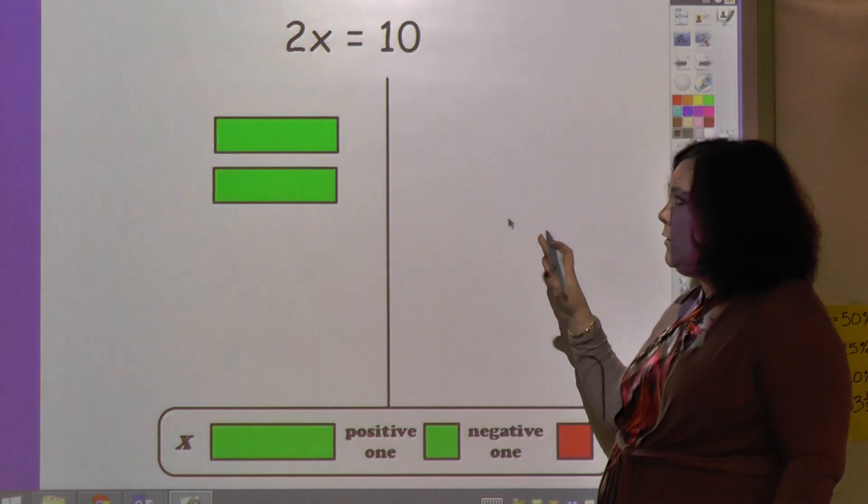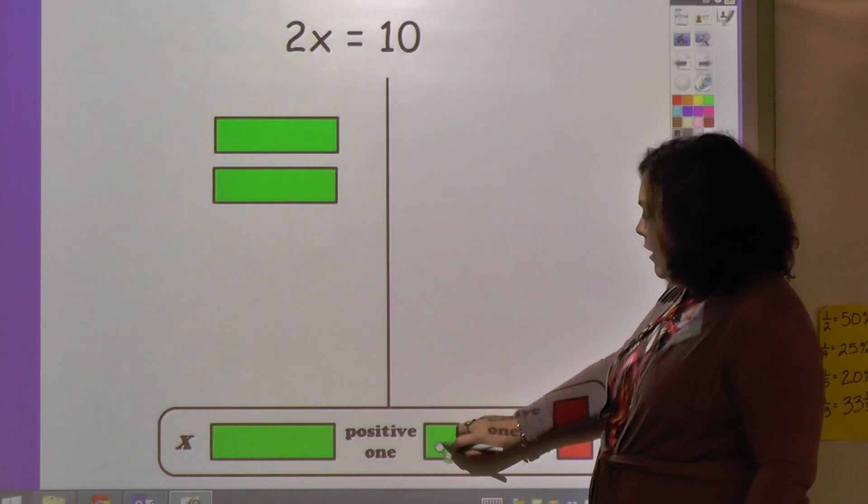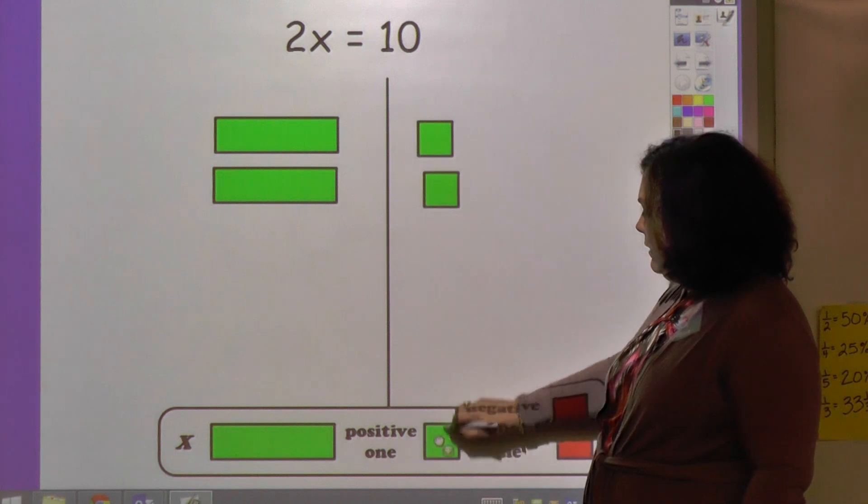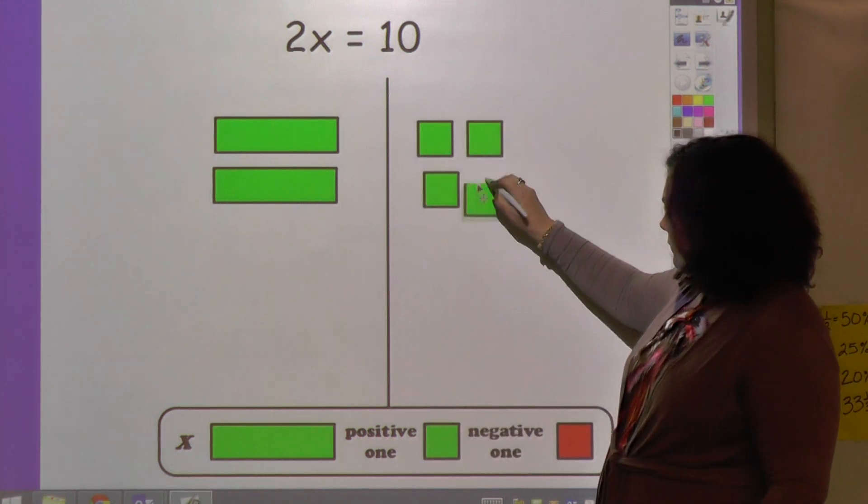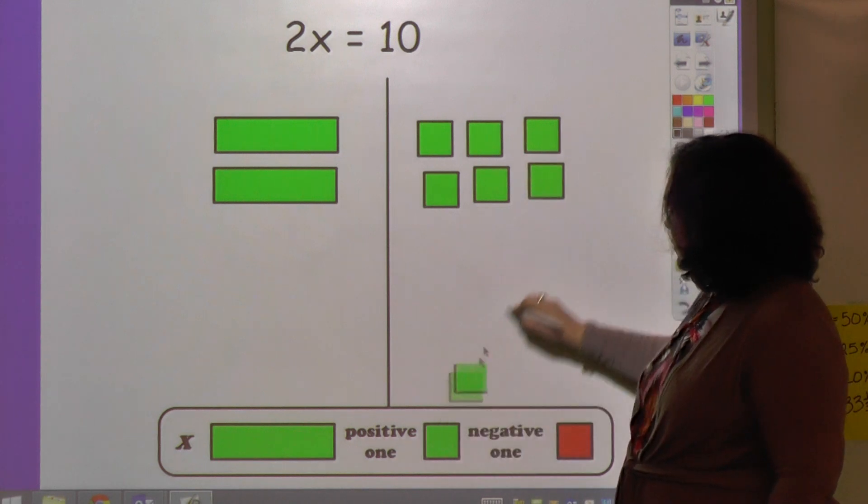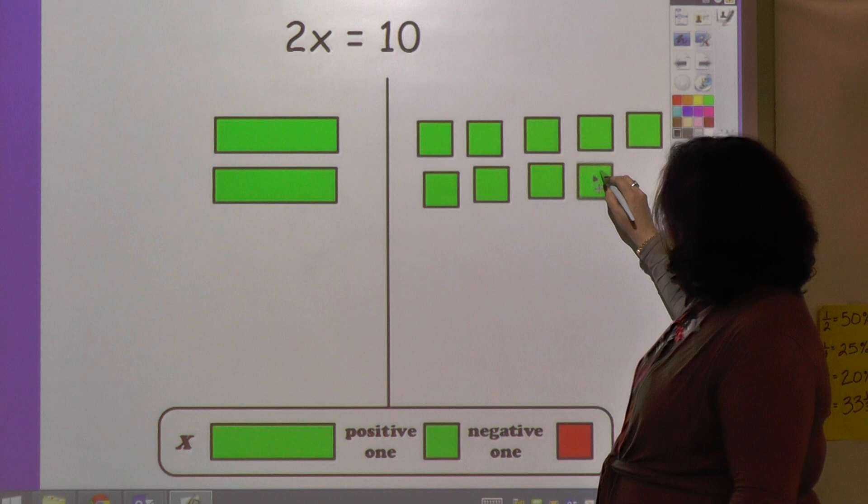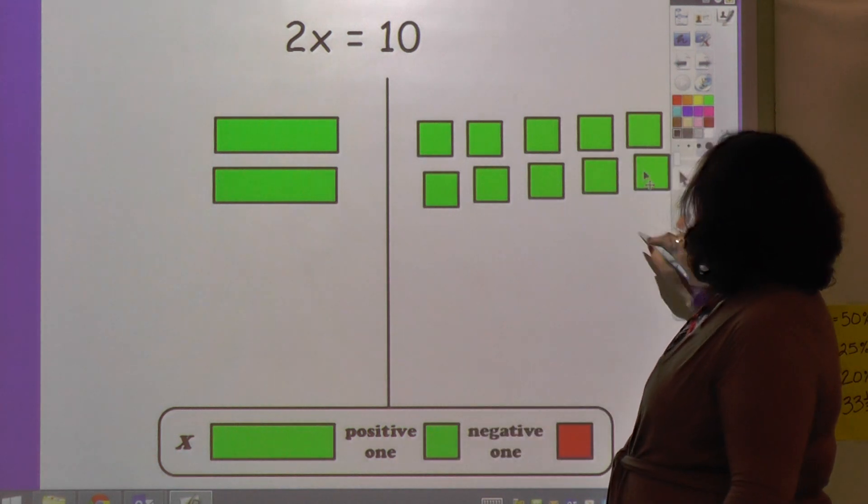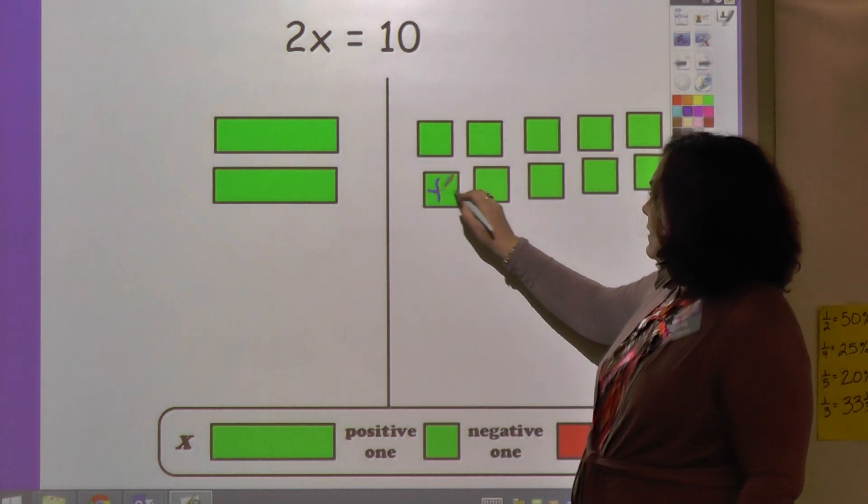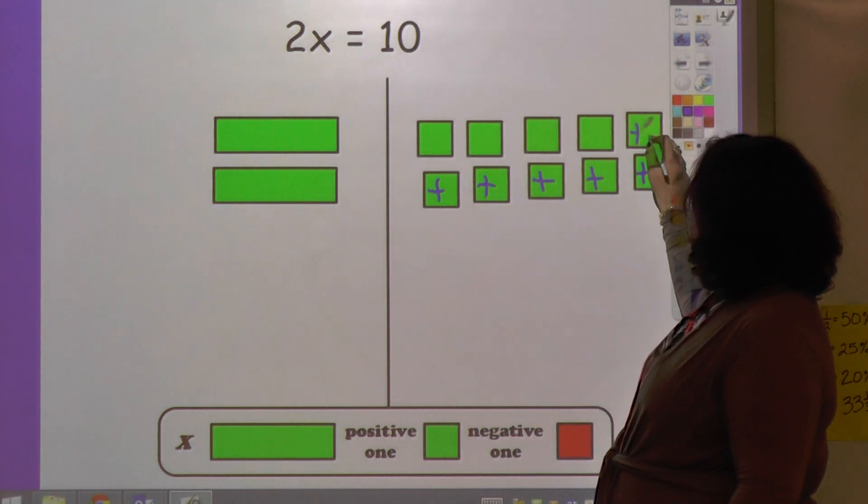This says equal to 10, so we need 10 numbers, not bars, to represent 10. And it's positive, so we're going to use five... 10 positive bars.